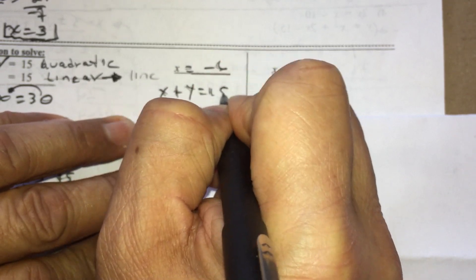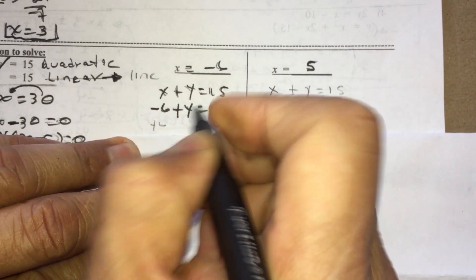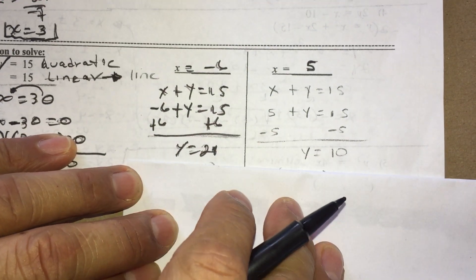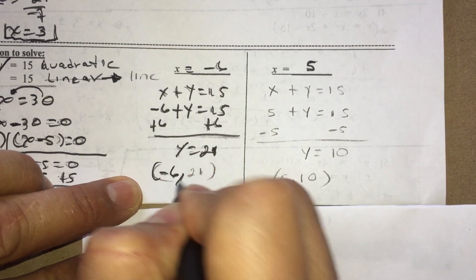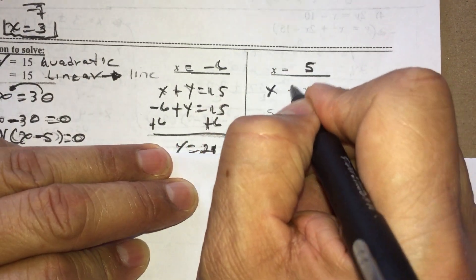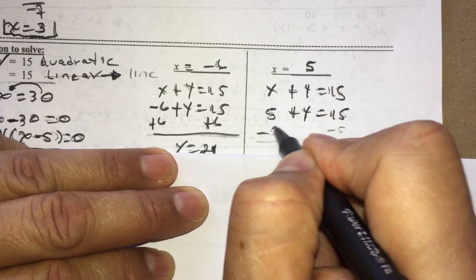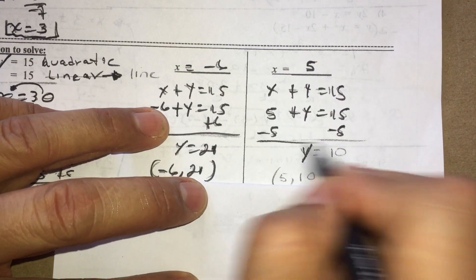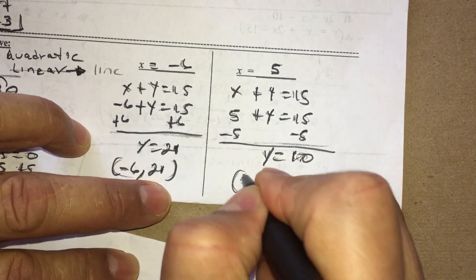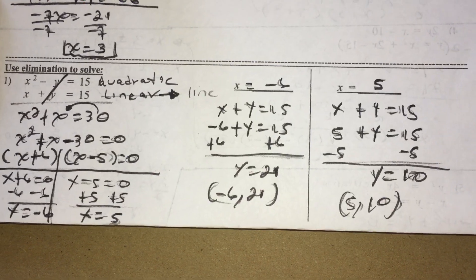For X = −6: substituting into X + Y = 15 gives −6 + Y = 15, so Y = 21. My first solution is (−6, 21). For the second value, using the same equation with X = 5: 5 + Y = 15, so Y = 10. My second solution is (5, 10). Today we're using elimination rather than substitution.